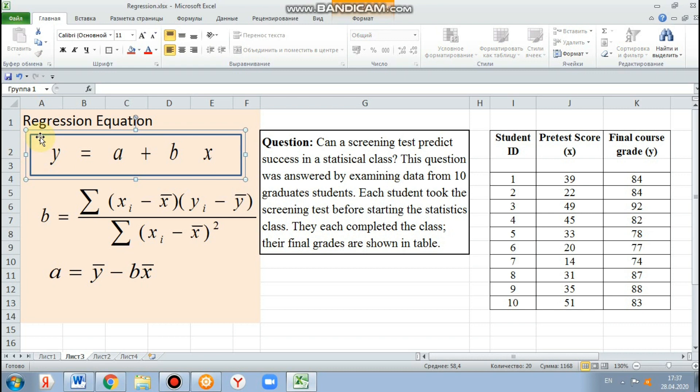Where y is outcome, a is intercept, b is the slope of the line, and x is the predictor variable.